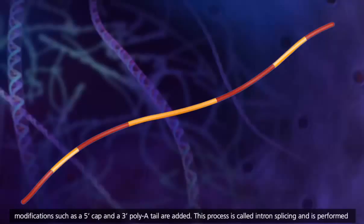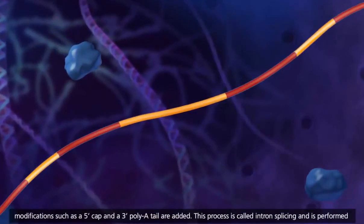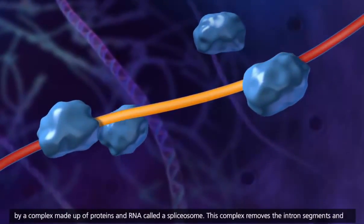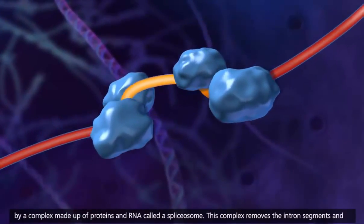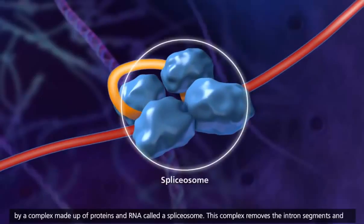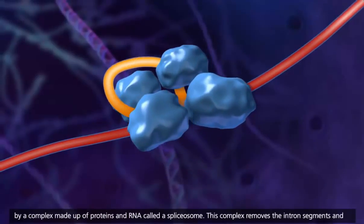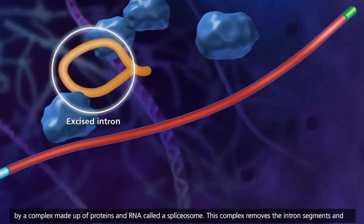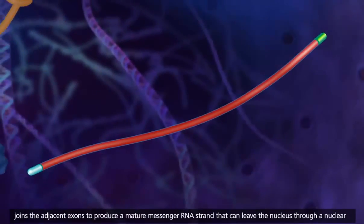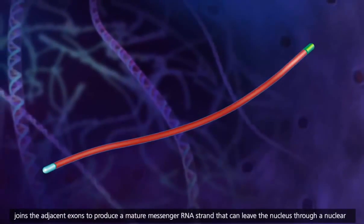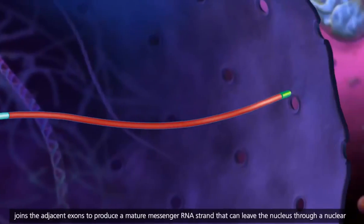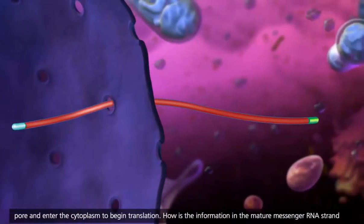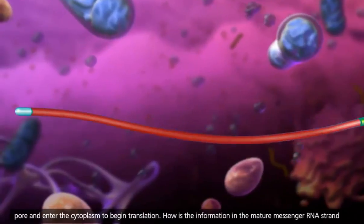Modifications such as a 5' cap and a 3' poly-A tail are added. This process is called intron splicing, and is performed by a complex made up of proteins and RNA called a spliceosome. This complex removes the intron segments and joins the adjacent exons to produce a mature messenger RNA strand that can leave the nucleus through a nuclear pore and enter the cytoplasm to begin translation.